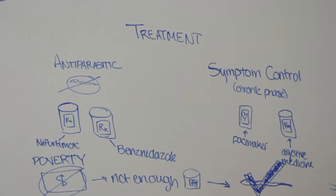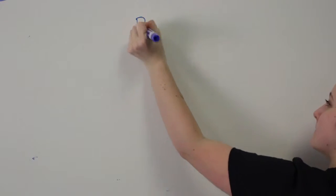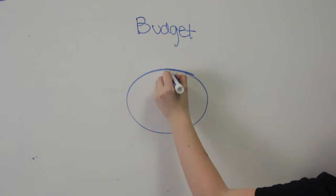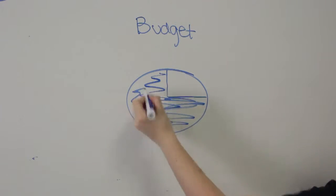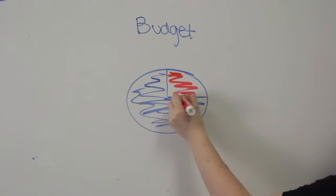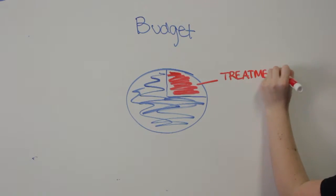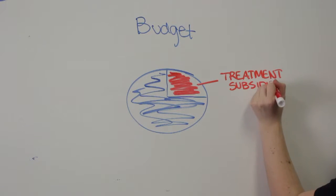As Chagas is easily preventable and treatable, we have decided to divide a $100,000 grant into two portions: vector control and treatment. $25,000 would go towards making treatment more affordable through government subsidies, and $75,000 would go towards eliminating the insect vector from homes, through better construction and the use of pesticides.